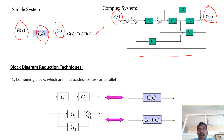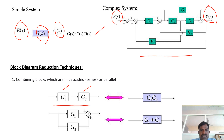Two blocks in cascade means they are in series, so we consider them as a single block by multiplying G1 and G2. For two blocks in series we multiply the two values, that means G1 times G2. Similarly, for blocks in parallel we add the two blocks, that means G1 plus G2.